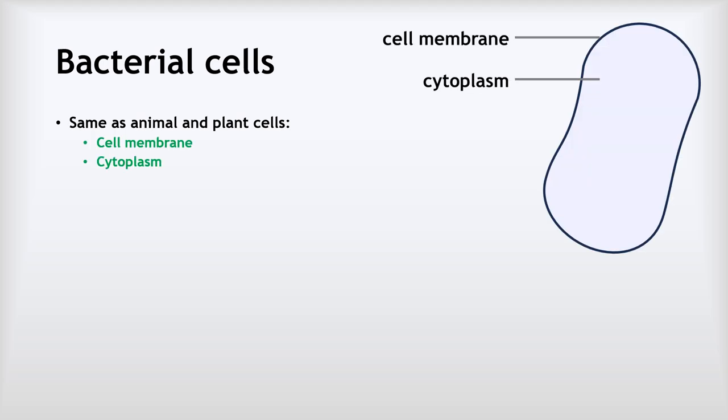Now the last kind of cell we're going to look at is the bacterial cells, and these have some features in common with animal and plant cells. So they have the cell membrane to control what enters and leaves the cell, they've got the cytoplasm for chemical reactions to take place, and they also have the ribosomes to make proteins.